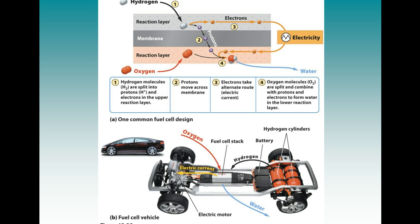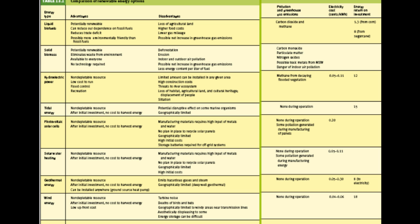This diagram shows how a hydrogen fuel cell would work in a vehicle. There is also a chart you'll need to fill out in class with the advantages, disadvantages, and pollutants from all of these energy sources. Pay attention to what pollutants and emissions come from all of these sources. You can also find it at the end of Chapter 13 in your book.